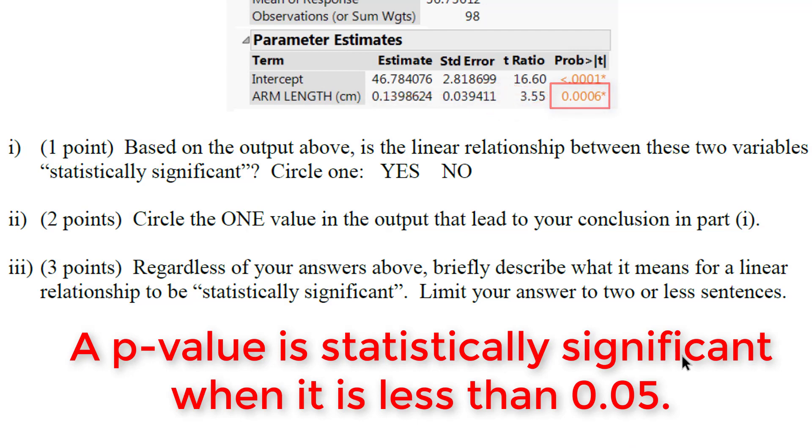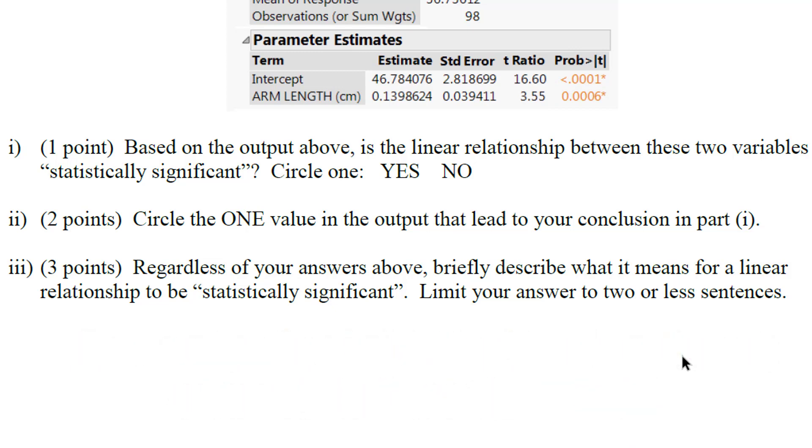And this is below our threshold of 0.05. And you'll notice JMP output usually stars this to denote that it is statistically significant. So yes, we have a statistically significant relationship. And of course the value you should circle right here is 0.0006.